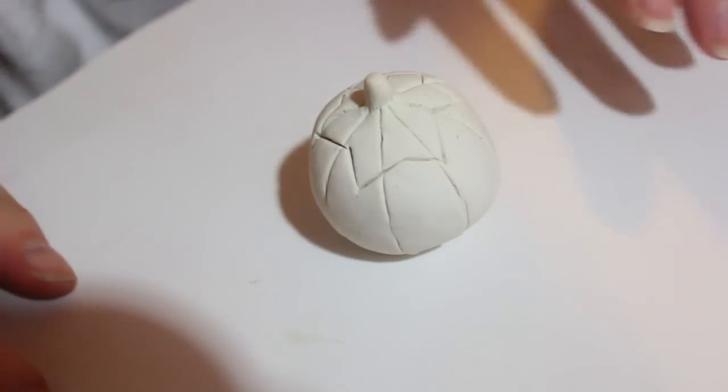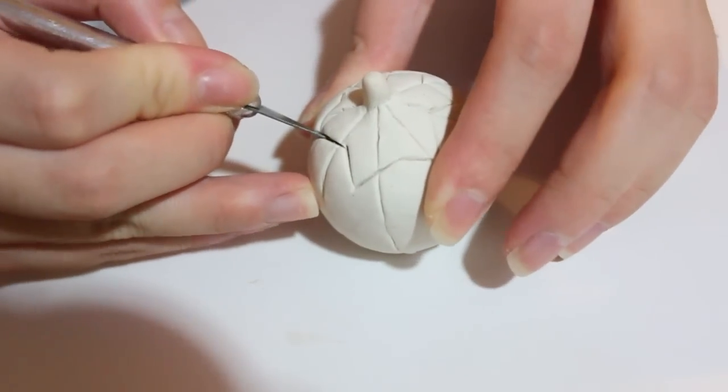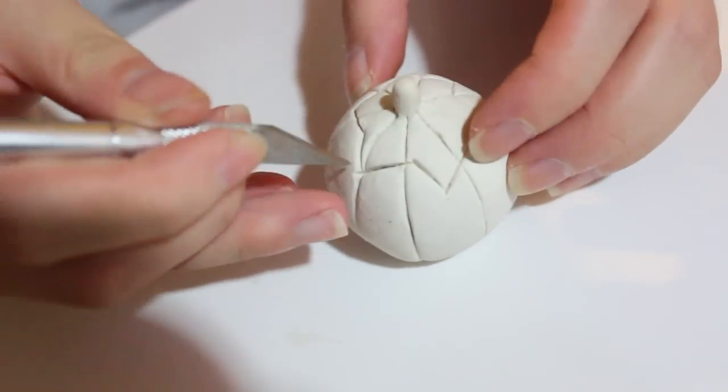I baked this at 275 Fahrenheit for about 30 minutes and now we are going to start cutting apart the three pieces of our pumpkin trinket box.